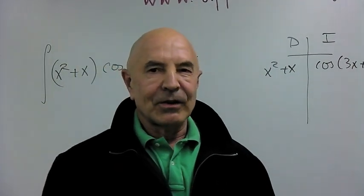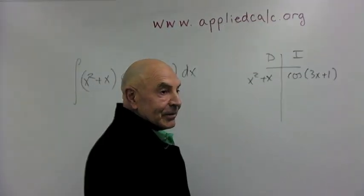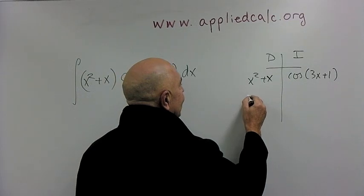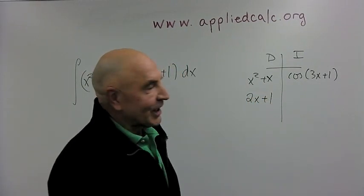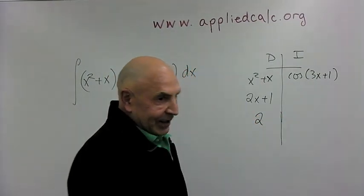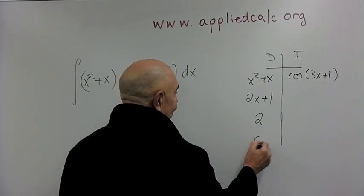Alrighty. So what do we do? We take the derivative a couple of times. How many times? Until it goes away. Take the derivative once. We get 2x plus 1. It hasn't gone away yet. So take the derivative again. We'll get 2. Now it's showing signs of disappearing. Take the derivative one last time and it's gone.